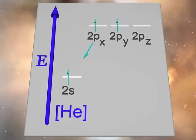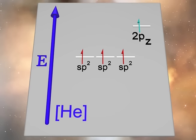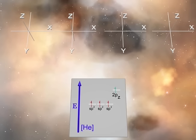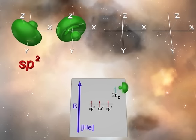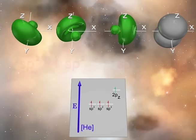Similar to the first step of sp3 hybridization, one can imagine promoting an electron from the 2s atomic orbital to the unoccupied 2pz atomic orbital. Mixing the 2s atomic orbital with two of the 2p atomic orbitals creates three new degenerate energy hybrid orbitals. The shape of the new sp2 hybrid orbital is best characterized as one part s and two parts p. The sp2 hybridized carbon now possesses three electrons in hybrid orbitals and one electron in an unhybridized 2pz orbital.